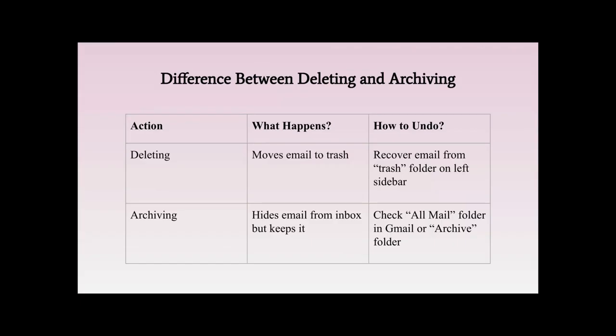How can we undo something if we delete it? When we want to recover an email we go to the trash folder on the left sidebar. And how can we undo something if we archive it? We can check the 'All Mail' folder in Gmail or the archive folder. So if we want to see deleted emails we go to the deleted folder, and when we want to see archived emails we go to the archive folder.